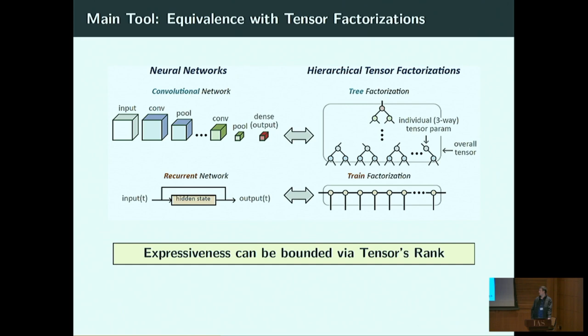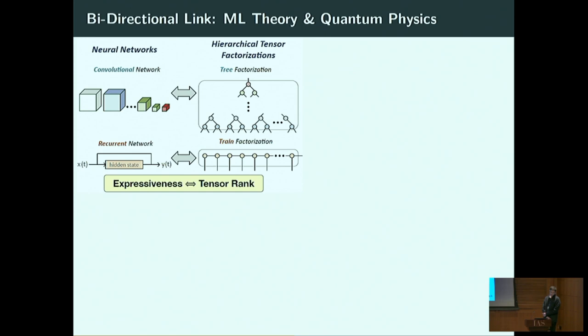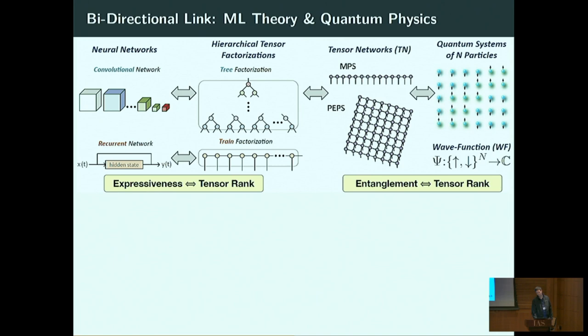All these results are derived from a single mathematical tool: an equivalence between neural networks and tensor factorizations, where different factorization schemes correspond to different network architectures. Specifically, tree factorizations correspond to convolutional networks and linear factorizations to recurrent networks. We bound the expressive capacity of the network by bounding the rank of its corresponding tensor factorization.